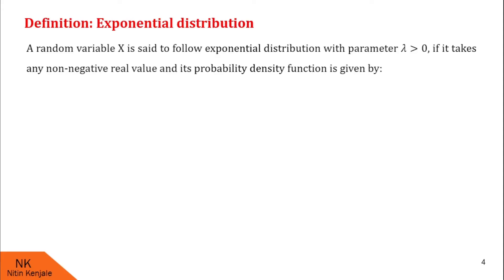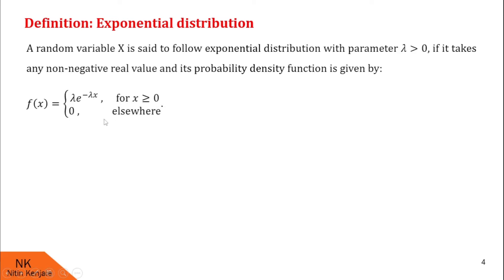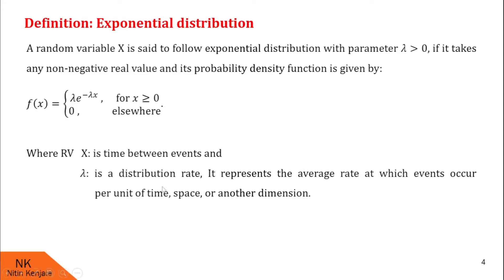Now we will see the formal definition of exponential distribution. A random variable x is said to follow exponential distribution with parameter lambda greater than 0 — note that lambda is the rate parameter — if it takes any non-negative real value and its probability density function is given by f(x) = lambda × e^(−lambda × x) for all x ≥ 0, and 0 anywhere else. Here x is the time between events, and lambda is the distribution rate, representing the average rate at which events occur per unit time, space, or another dimension.